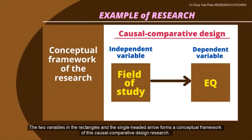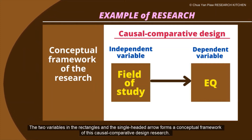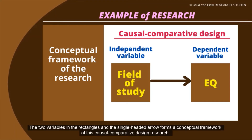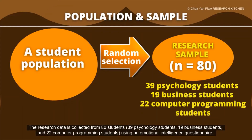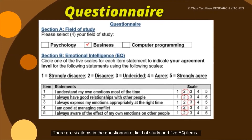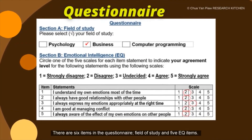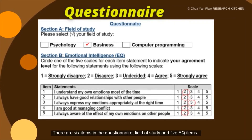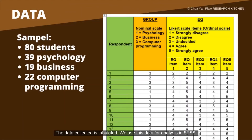The two variables in the rectangles and the single-headed arrows form a conceptual framework of this comparative design research. The research data is collected from 80 students: 39 psychology students, 19 business students, and 22 computer programming students, using an emotional intelligence questionnaire. There are six items in the questionnaire, and we will study five EQ items. The data collected is tabulated and we will use this data for analysis in SPSS.